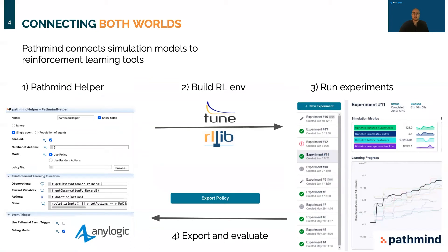So how would you connect both worlds? One of the answers is to use Pathmind, and I'm going to show you what you can do with it in one example. If you have an existing model like the factory model we talked about, you can install an AnyLogic plugin called Pathmind Helper that exposes a simple interface familiar to reinforcement learning practitioners. You have to provide functions for observations, rewards, and your done condition, but it's built in a way that simulation models can understand quickly.